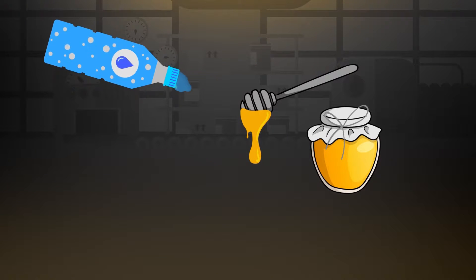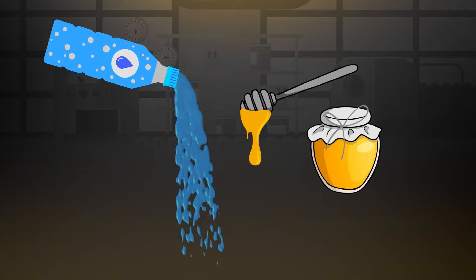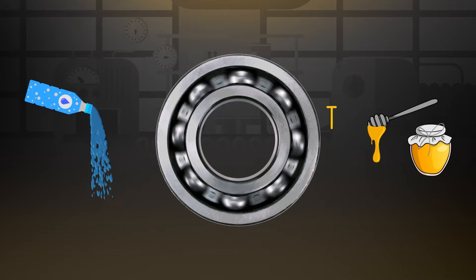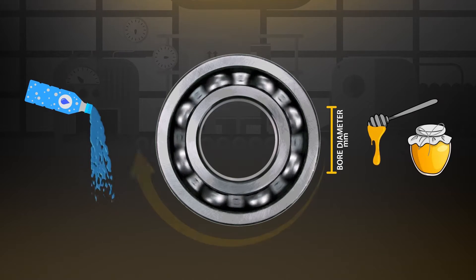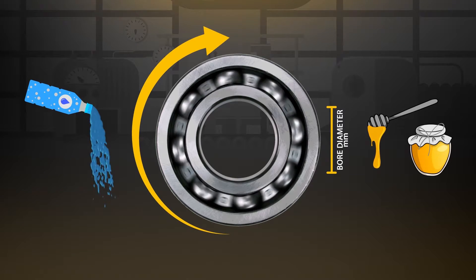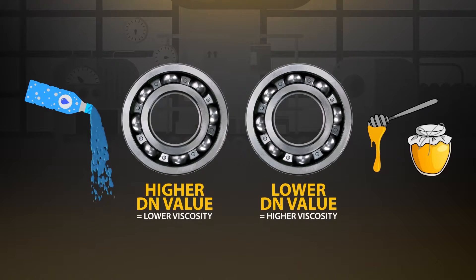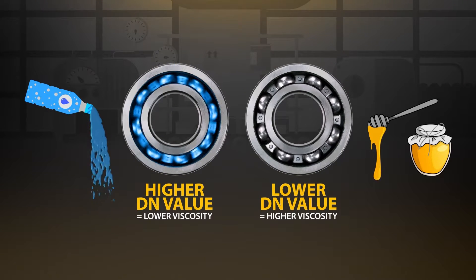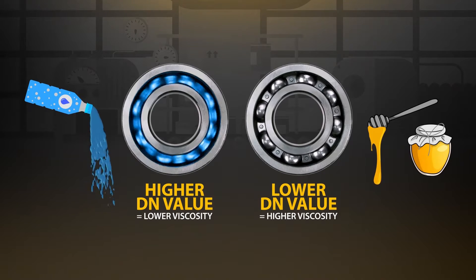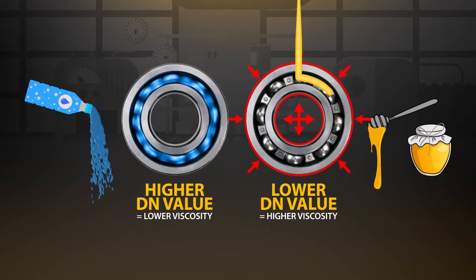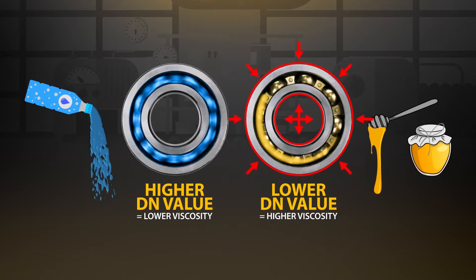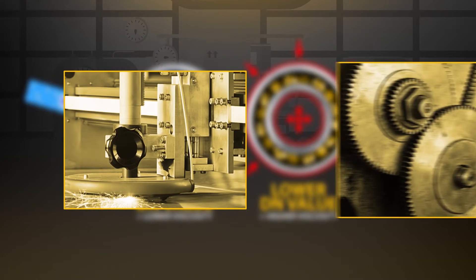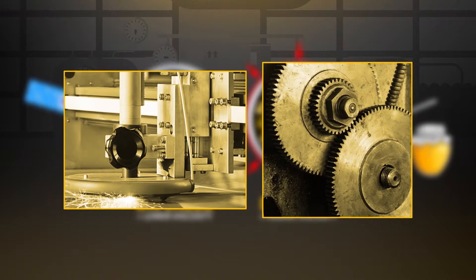Think of viscosity or flow as thickness. For example, honey has a higher viscosity than water. The DN value of a bearing is the diameter in millimeters multiplied by the revolutions per minute. The rule of thumb is that lower viscosity or thinner oils are used in higher DN value fast bearings. Higher viscosity oils are used for slower or lower DN value bearings which are heavily loaded, for example gear applications or slideway guideways.